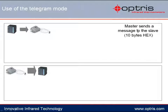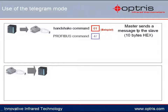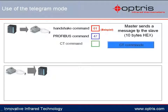The first byte consists of a handshake command. This command needs to include a different address after each completed sending and receiving process. The second byte is the PROFIBUS command 47, which informs the temperature sensor that a following command will be sent. The third byte includes the actual command, specifying which setting of the sensor will be changed or which information will be requested from the sensor.